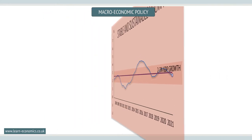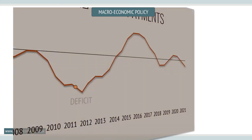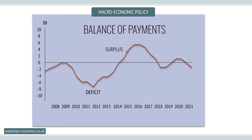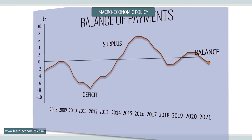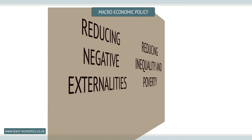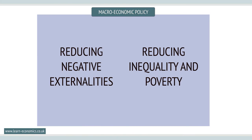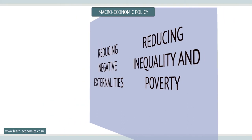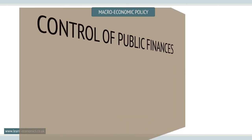And to achieve a balance of payments with the rest of the world. In addition to these core objectives, policy makers can set targets to control pollution and other negative externalities, and to achieve greater equity through reduction in inequality and poverty. In recent years, the control and management of public finances is seen as an increasingly important objective, especially following the financial crash of 2008 to 2010.